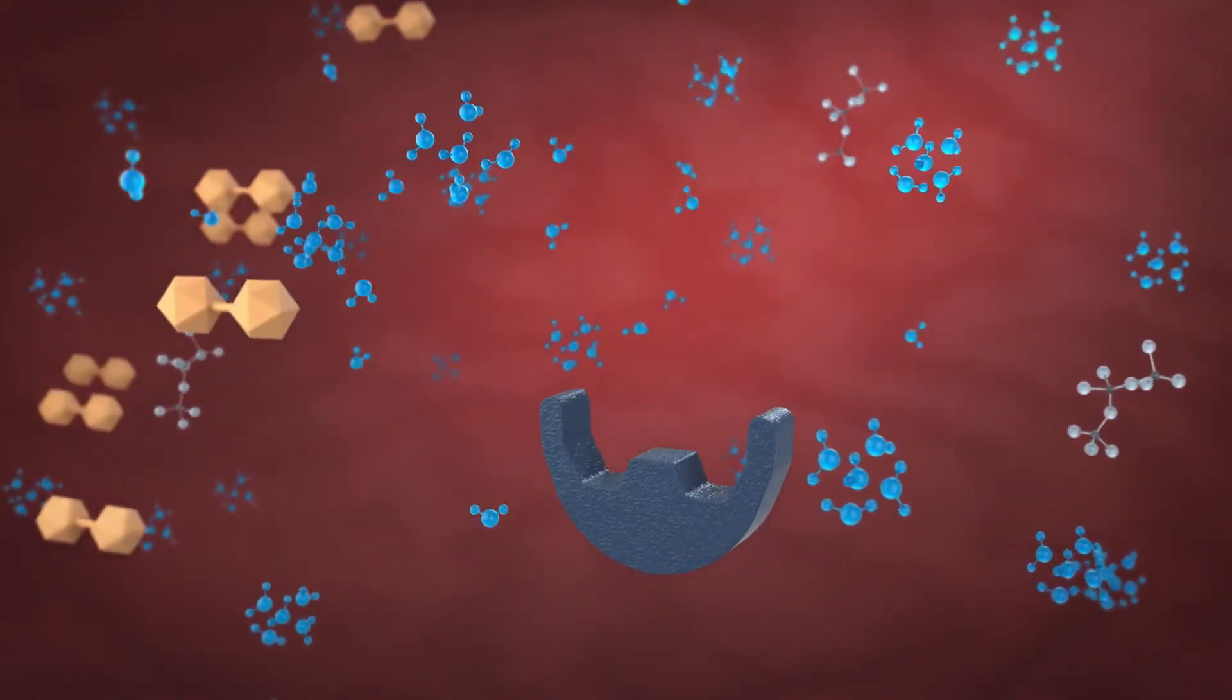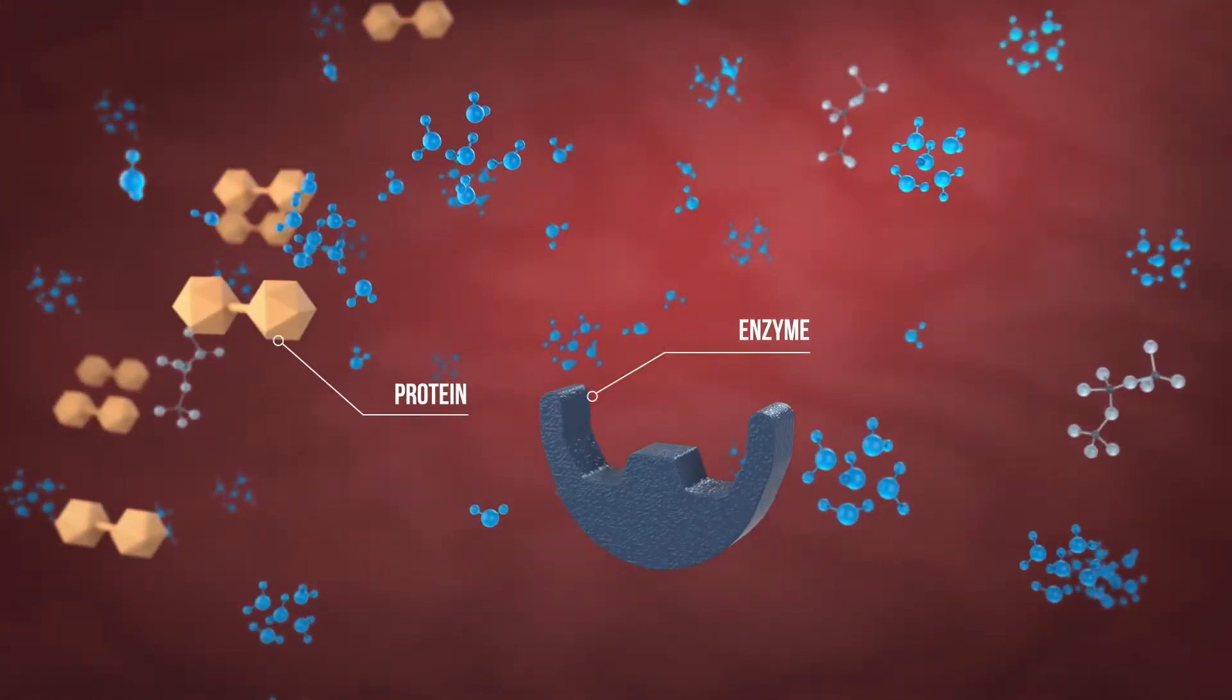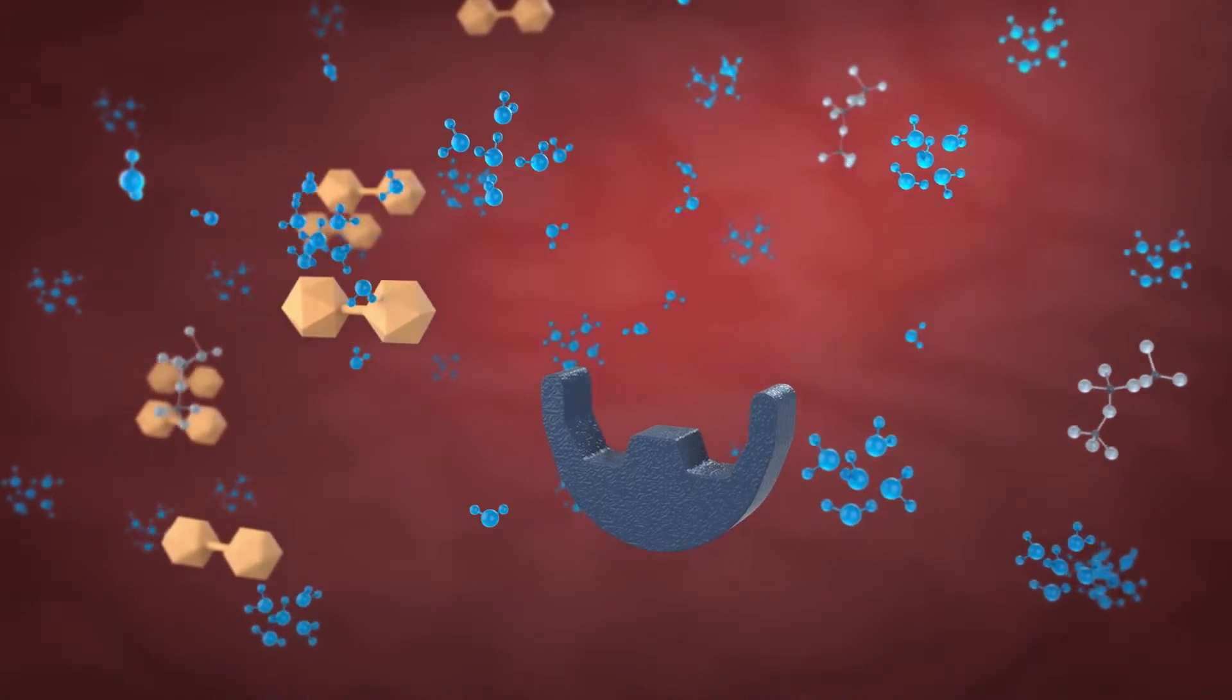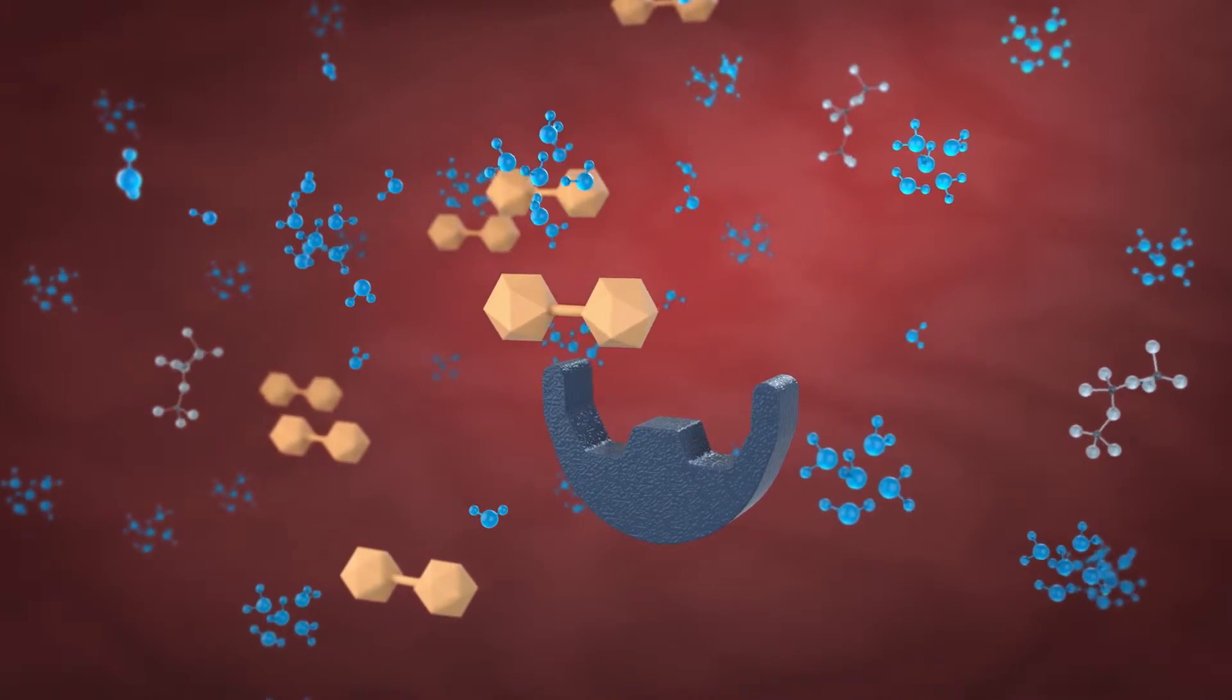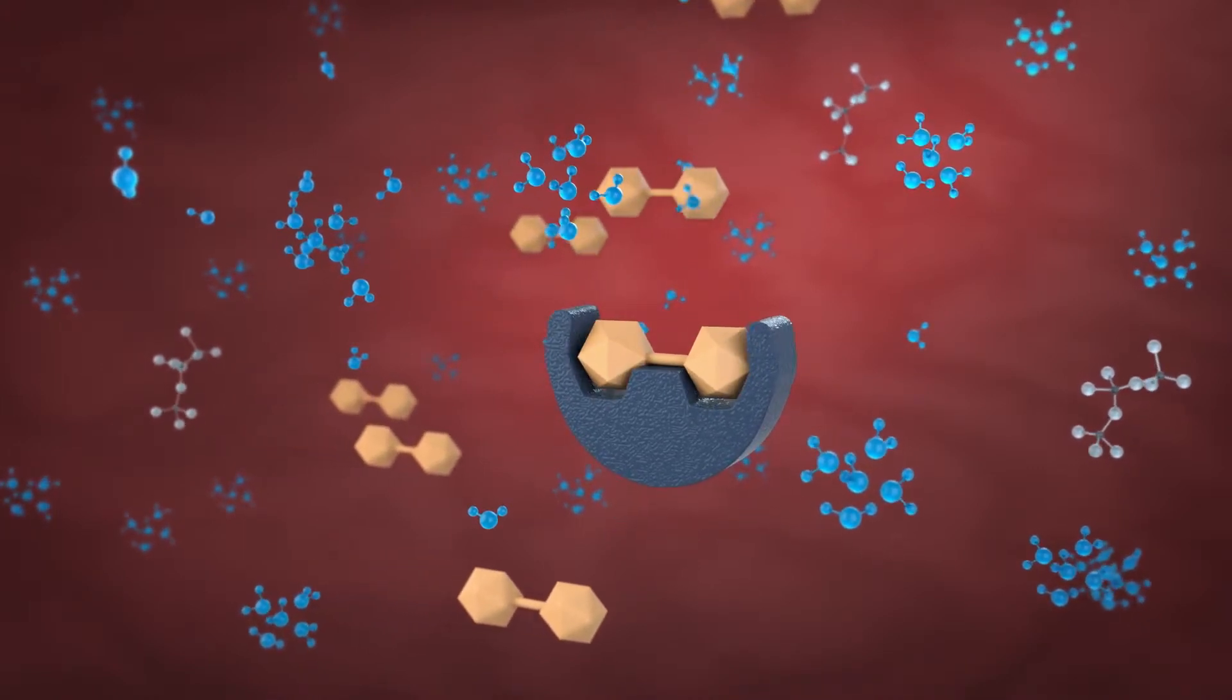During digestion, several reactions take place to process food. All of these reactions involve ionic exchanges in aqueous solution. For example, protein in the feed needs to be broken down in order to be digested.